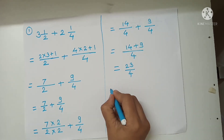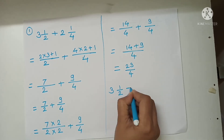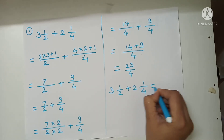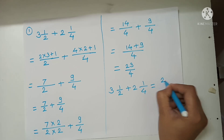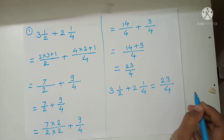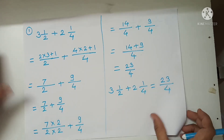So, 3 and 1 upon 2 plus 2 and 1 upon 4 is equal to 23 upon 4. Do you understand this example?